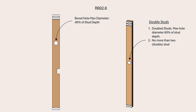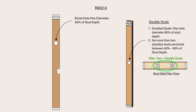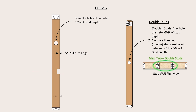If double studs are used, the hole diameter shall not exceed 60% of the stud depth. Secondly, if the hole diameter is between 40% and 60% of the stud depth, then the studs must be doubled. However, no more than two double studs are allowed to be bored with the diameter of the hole exceeding 40% of the stud depth. Thirdly, the distance from the edge of the stud should not be less than 5/8 of an inch. Fourthly, bored holes shall not be located in the same cross-section with a cut or a notch in the stud. And finally, notches on studs must not exceed 25% of the stud depth.